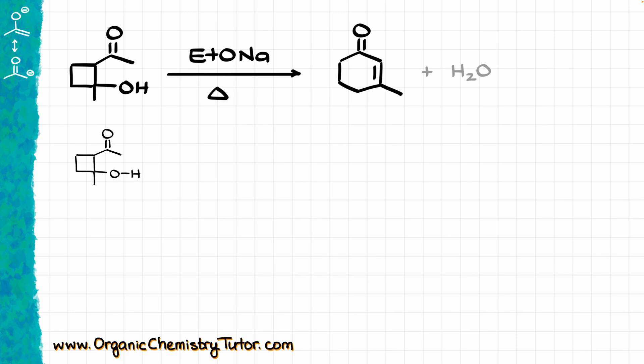I'm going to start by drawing my starting material and the ethoxide base, and the very first step that I'm going to do here is the proton transfer, deprotonating my molecule at the OH group, and forming the corresponding negatively charged intermediate.